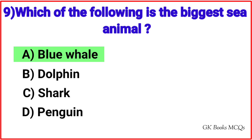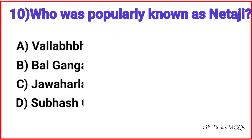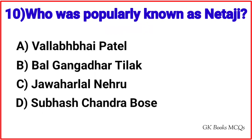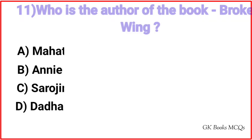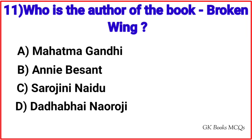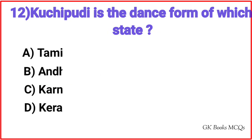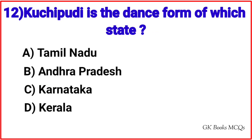Question 9: Which of the following is the biggest sea animal? Correct answer is option A, Blue Whale. Question 10: Who was popularly known as Netaji? Correct answer is option D, Subhash Chandra Bose.